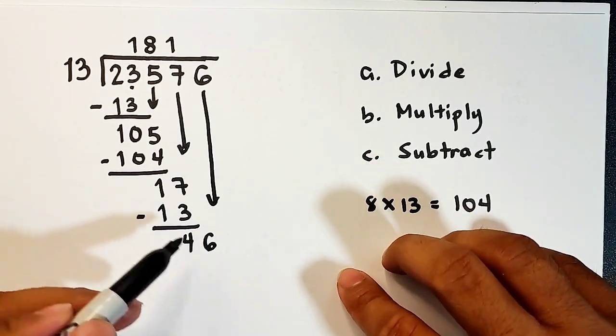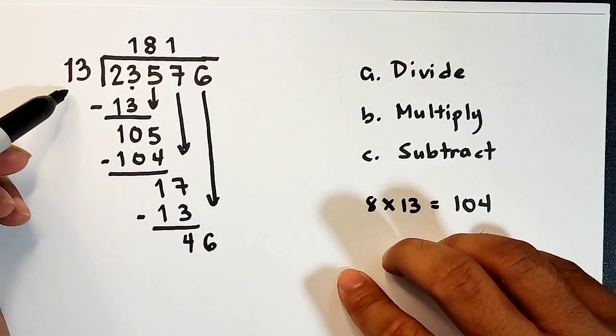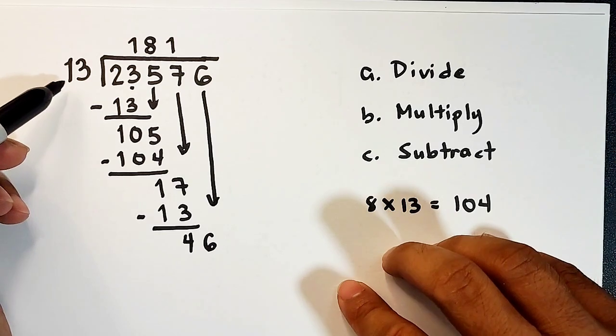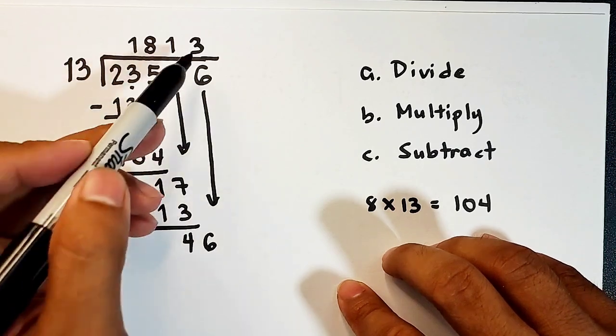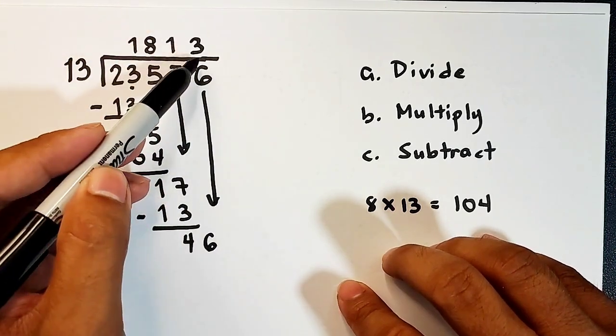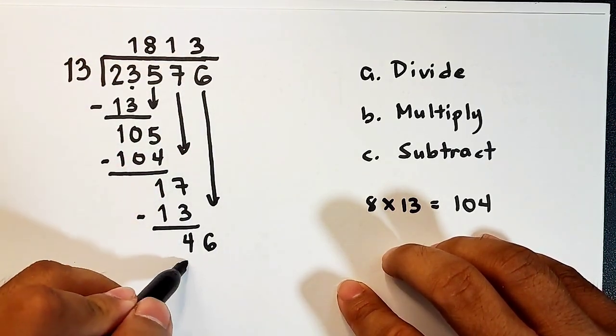And then bring down 6. So what we have here is to divide 46 by 13. We only have 3 thirteens inside 46. That's why we have here 3. And 3 times 13, that is 39.